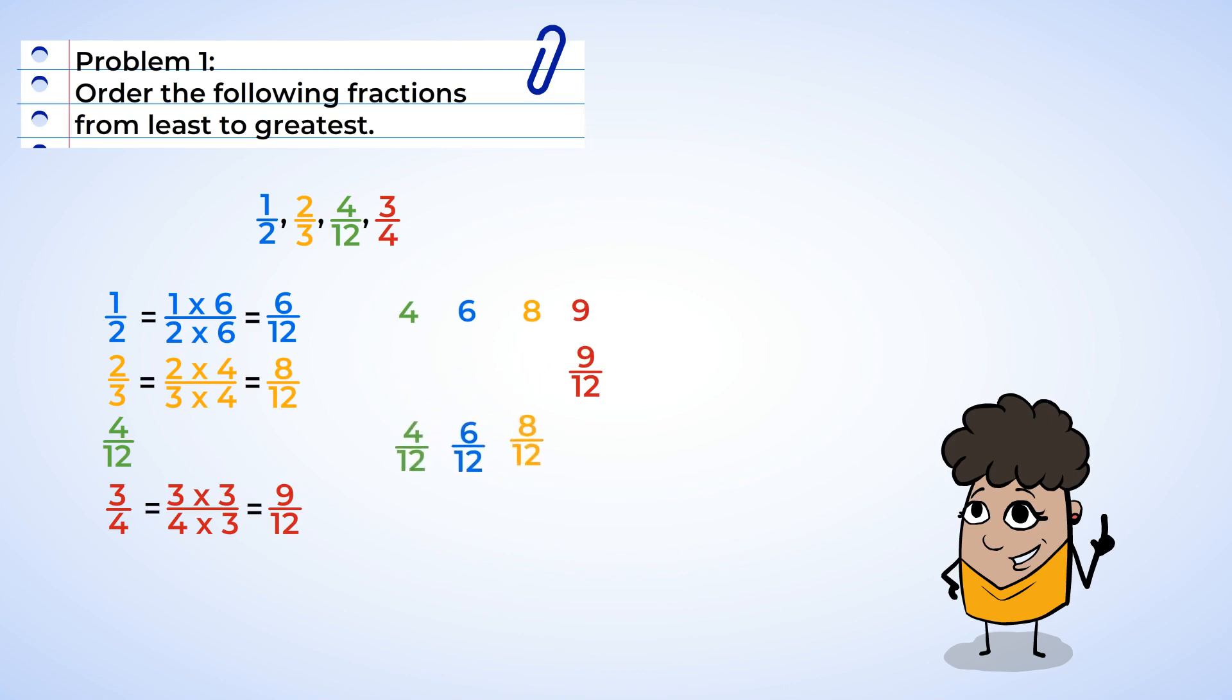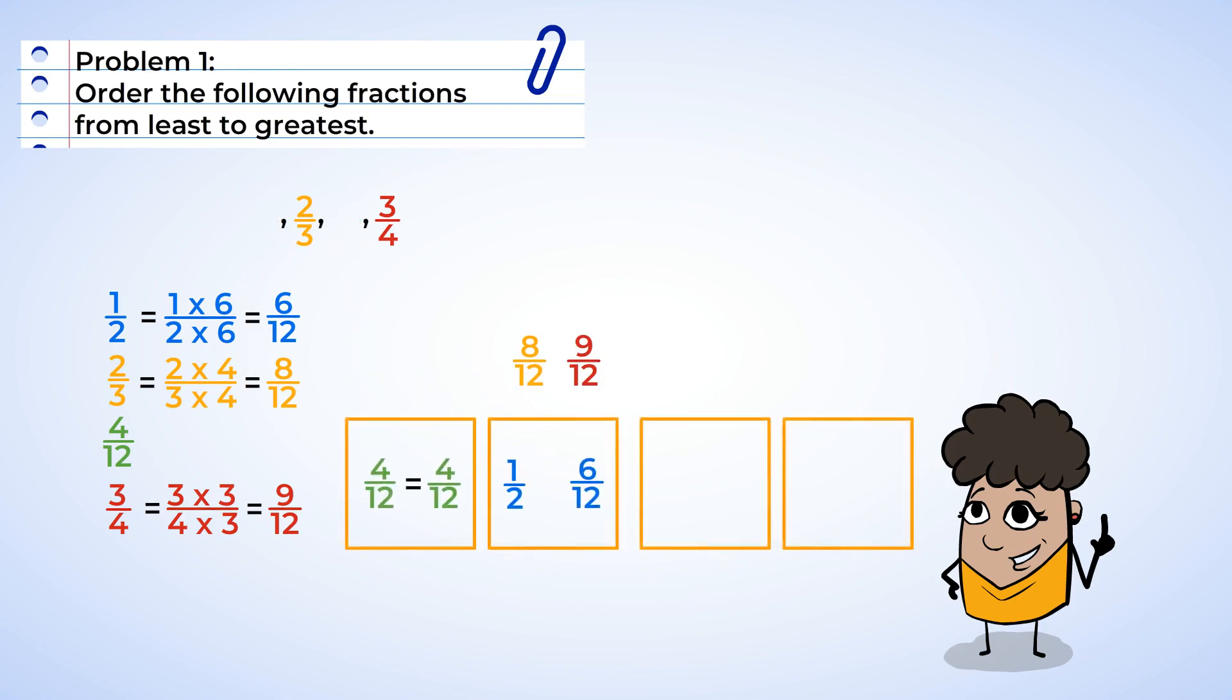Now we can put the fractions in order from least to greatest. Four-twelfths, six-twelfths, eight-twelfths, and nine-twelfths. And last step, rewrite the original fractions in order, and we get four-twelfths, one-half, two-thirds, three-fourths. Awesome work.